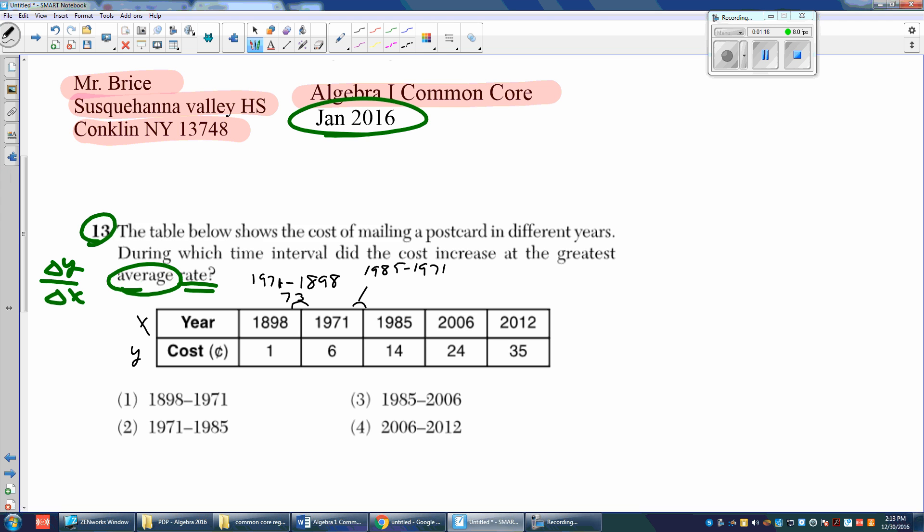I'm going to do 1985 minus 1971. I'm going to remember that I'm doing the right one minus the left one, and that is 14. And then we do 2006 minus 1985, and that equals 21. Then the last one, 2012 minus 2006, and that's 6. So those are our delta Xs.